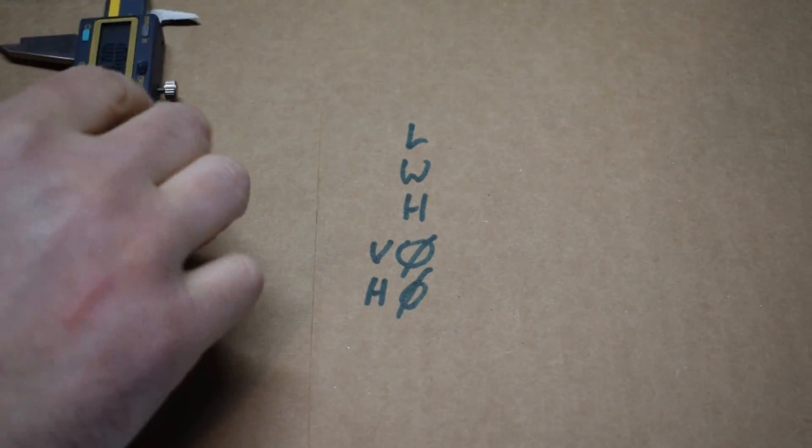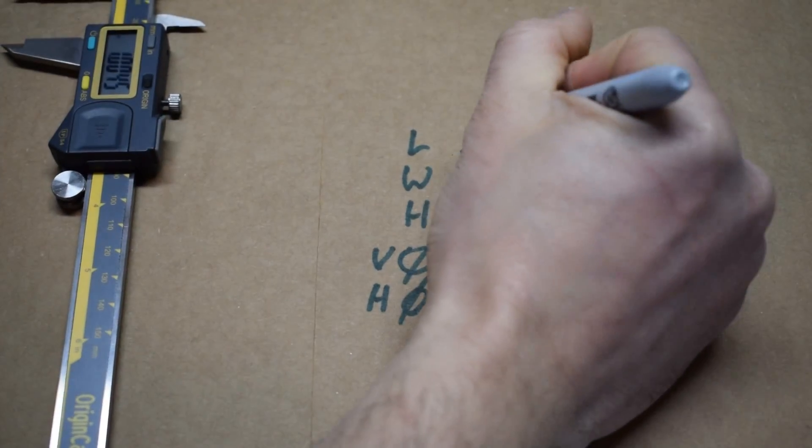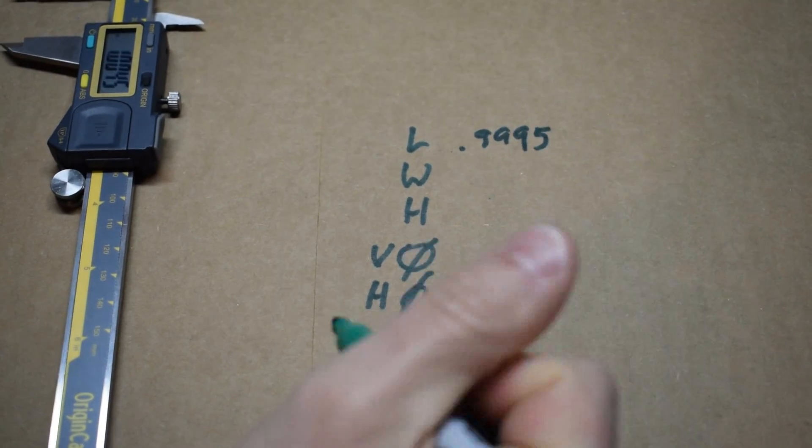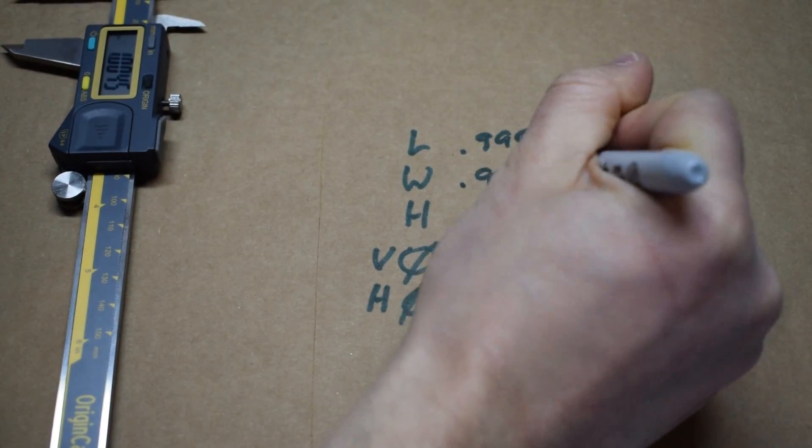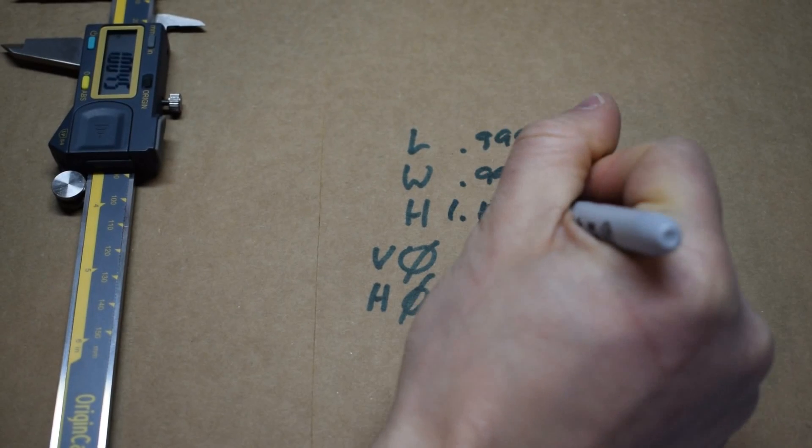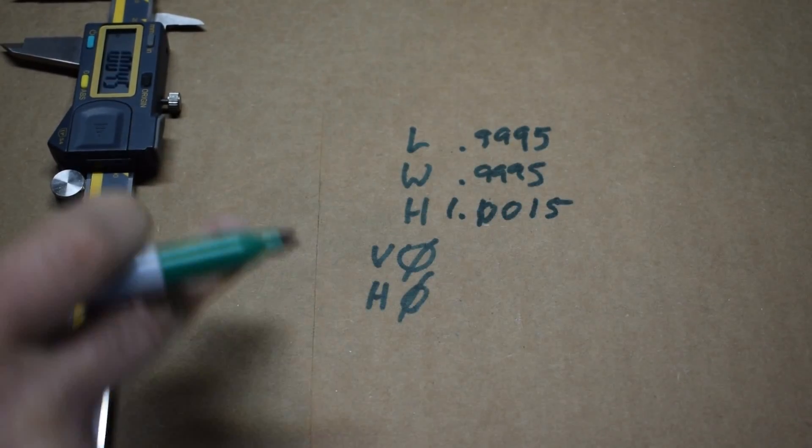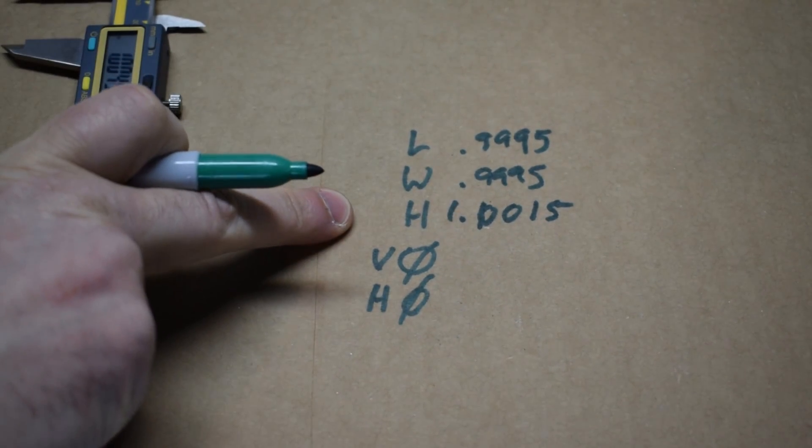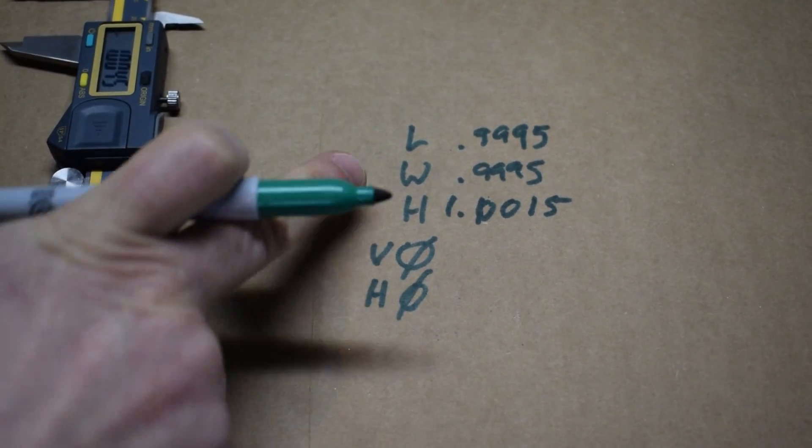For the length I get 0.9995. For the width 0.9995 and for the height 1.0015. So by taking into account the variations that we measured in the first test parts, we can dial in those dimensions to hit our one inch target.